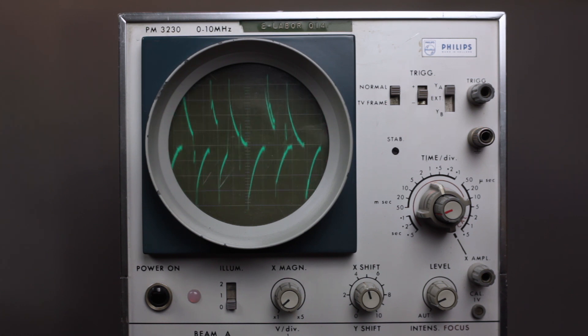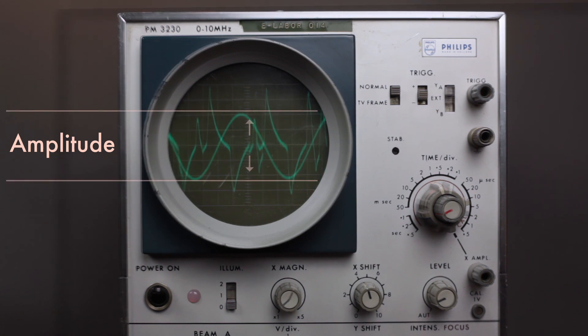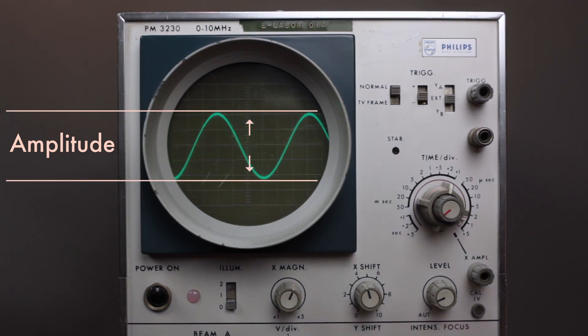And most importantly for us, the amplitude. It's shown by the amount the signal's voltage oscillates up and down. Amplitude is the term we use to describe the physical property of the signal. Volume is our perception of the amplitude.